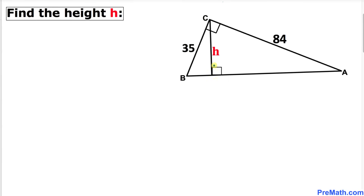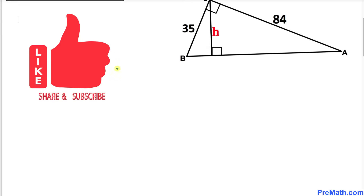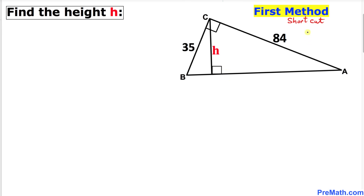Welcome to pre-math. In this video tutorial we have a right triangle ABC with side lengths 35 and 84 units. We have a perpendicular H and we are going to find the value of this height H. In this video lesson I will share two different methods, and here is our very first method.